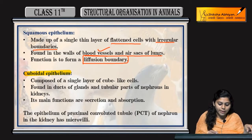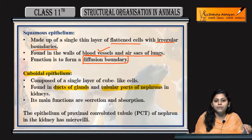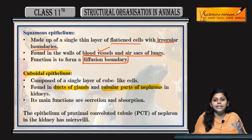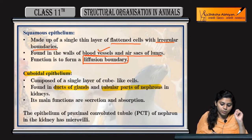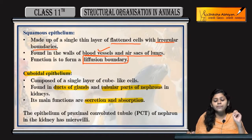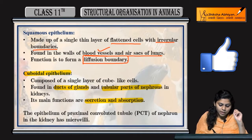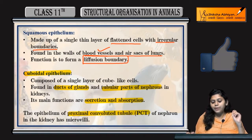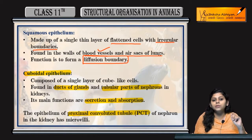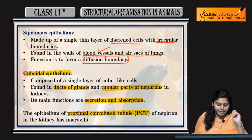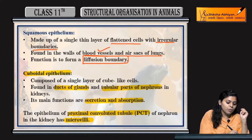Next one is cuboidal epithelium — cube-like structures. Where are they found? In ducts of glands and tubular parts of nephrons. Nephrons are found in the kidney, which is the structural and functional unit of the kidney. The main function is secretion and absorption. In the proximal convoluted tubule (PCT) of the nephron, microvilli are present on the cuboidal cells.